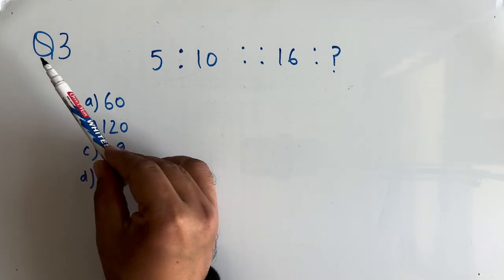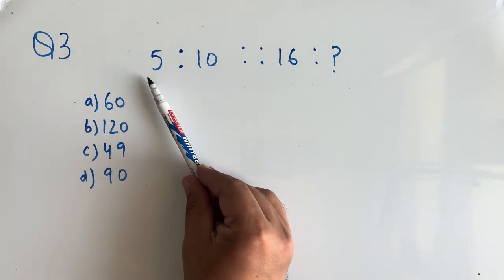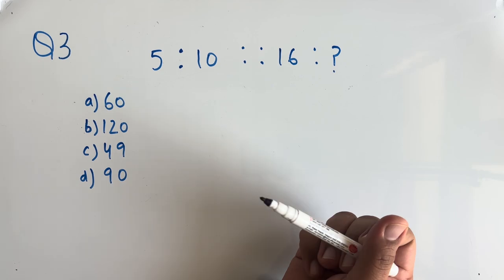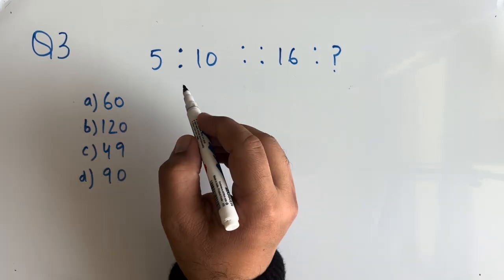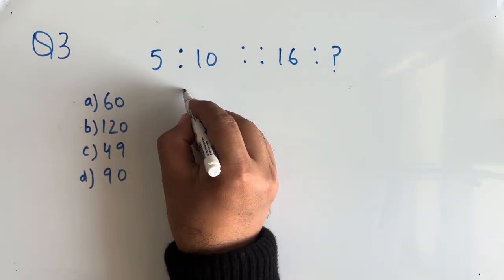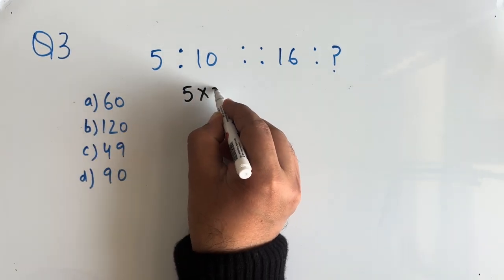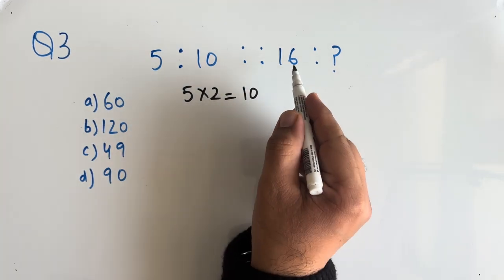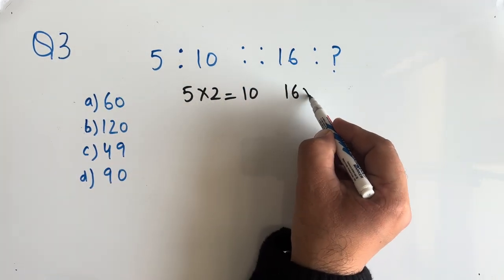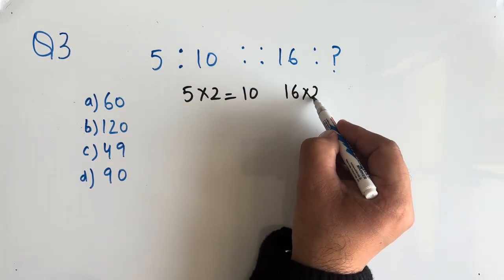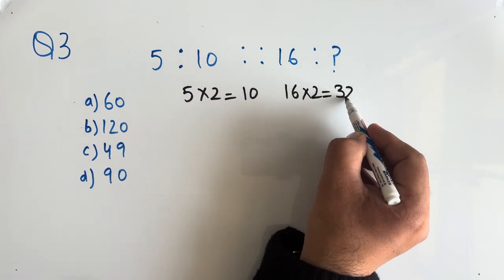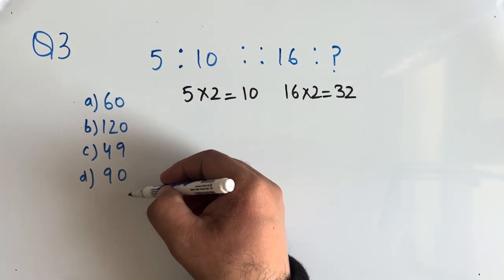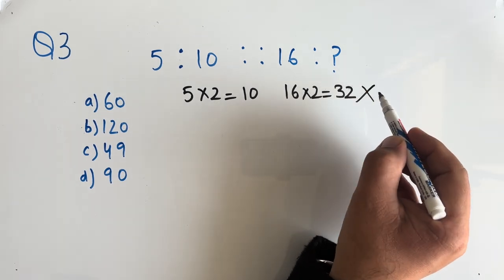Now question number 3: 5 is to 10, what is 16 is to? Now if we multiply 5 by 2, we get 10. In the similar way, if we multiply 16 by 2, we get 32. But 32 is not in the option, so we will try another way.